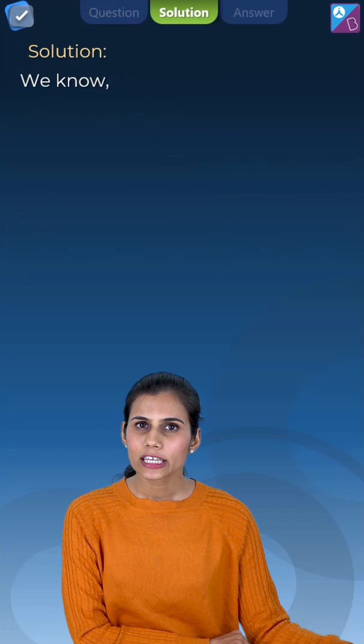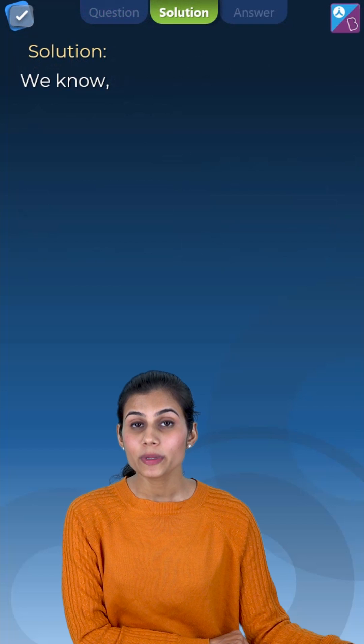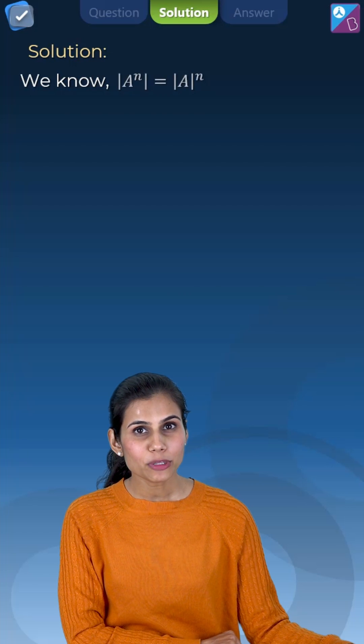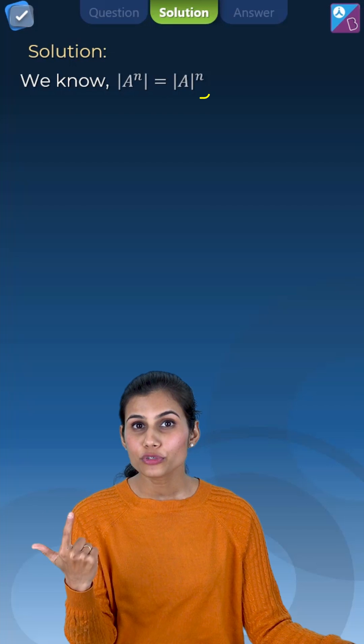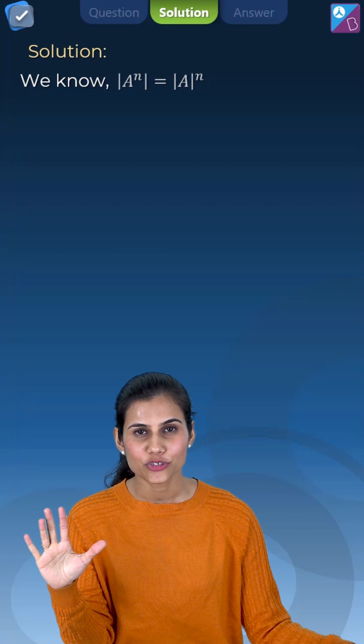Realize we are given that determinant of A cube is equal to 125. Does this ring any bell? Yes, we are aware of the amazing property that determinant of A to the power n is exactly equal to determinant of A whole to the power n for any n natural number.